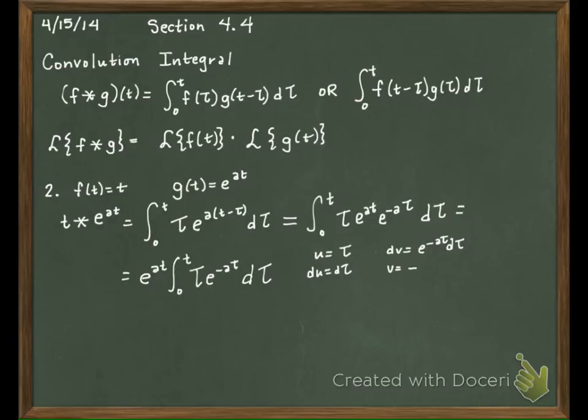Negative one over A, E to the negative A tau. If you took a derivative, it would be A. If you integrate it, it's one over A.